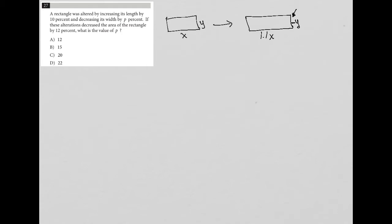So what do we know? What else are we told? If these alterations decrease the area of the rectangle by 12%, what is the value of P? Well, what is the area of the first rectangle? I'm going to call that A1. I'm going to call this one A2. In order to find the area for the first rectangle, I just multiply X times Y. So area for first rectangle must be X times Y.